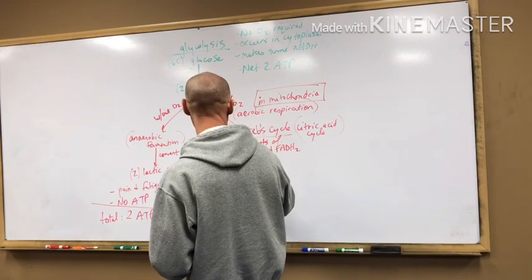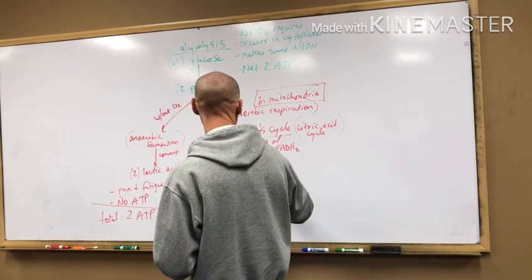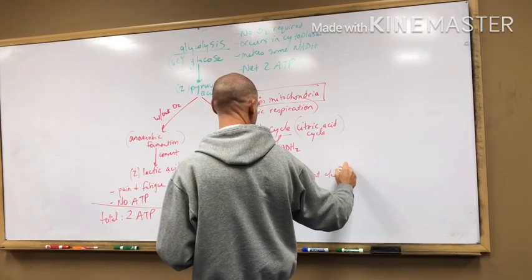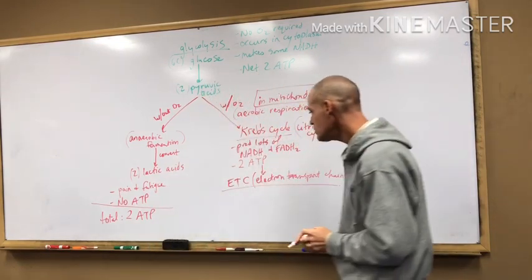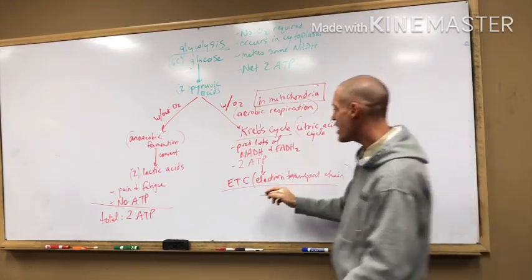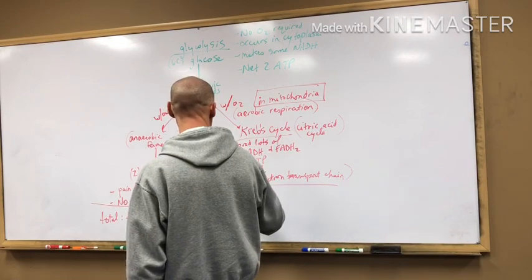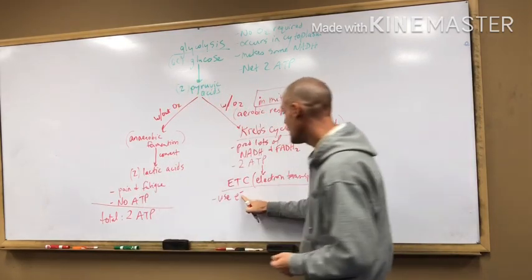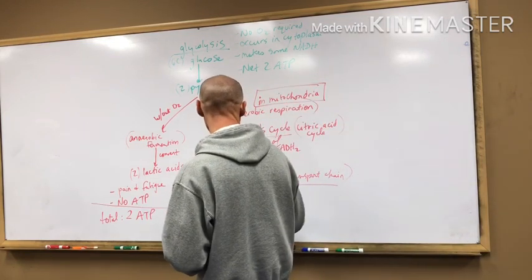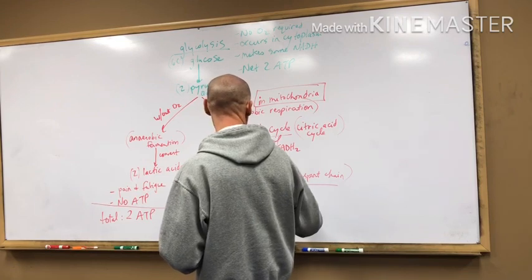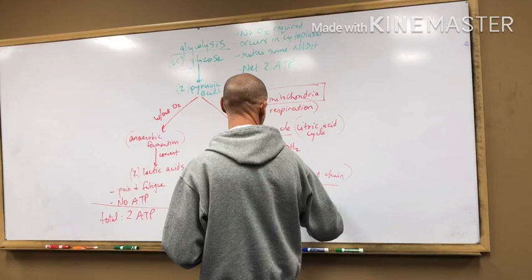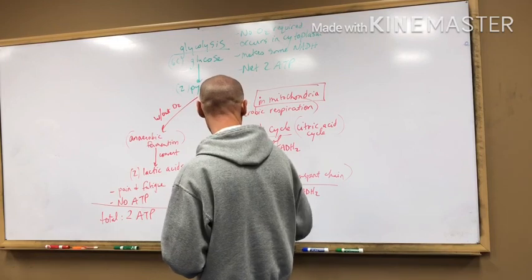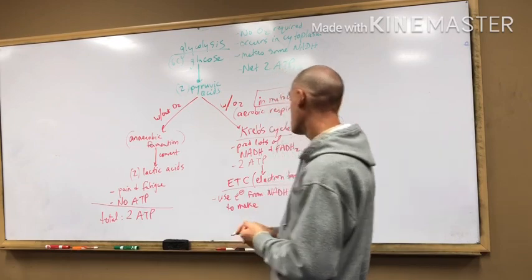Then from Krebs, where do we go? We finish off the ETC, electron transport chain. The electron transport chain is where we go. And we're going to take, it's going to use the electrons from the NADH and FADH2 to make lots of ATP.